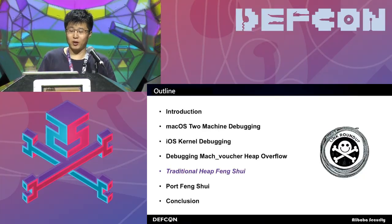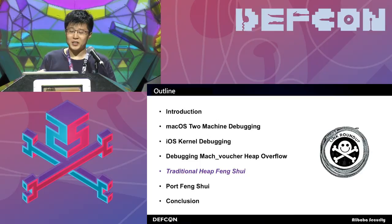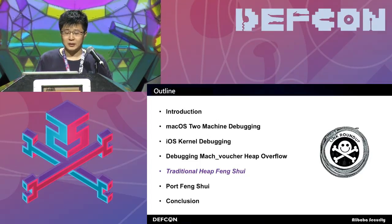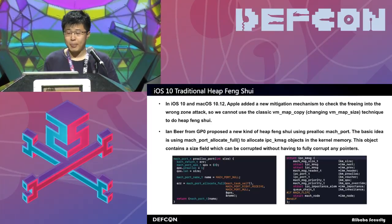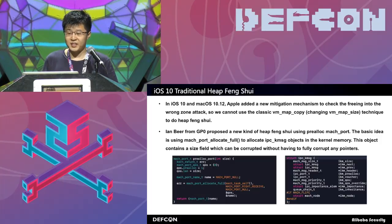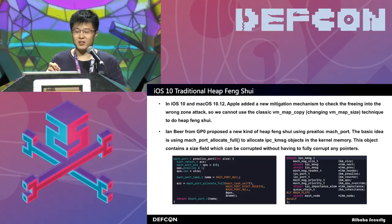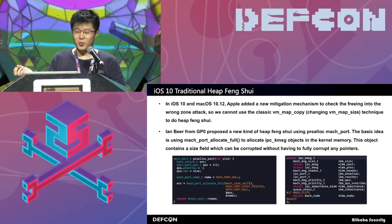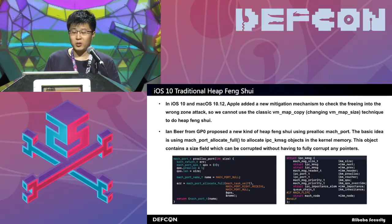Now we have the ability to overflow arbitrary content of data, but we need to find a way to do kernel read and write — so we need to do some heap feng shui. There are two ways to do heap feng shui in iOS 10 and macOS 10.12. We know that we cannot use the classic VM map copy technique to do heap feng shui by changing the VM map size, because Apple added a new mitigation — they will check the free-into-wrong-zone attack. Which means if you change the size of the VM copy, the kernel will panic. So we need to find a way to avoid that.